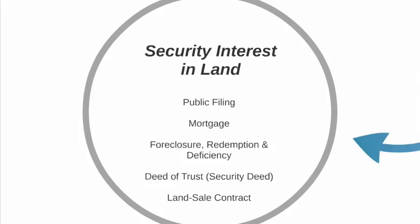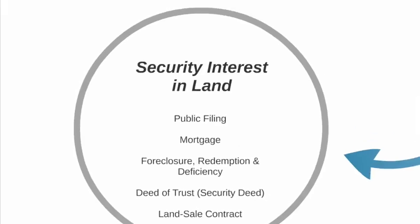We talk about the foreclosure process when a debtor fails to make payments on the mortgage. We talk about the redemption rights of the debtor against whom foreclosure has been executed. We talk about deficiency or the ability of the secured party to seek a deficiency judgment against the debtor. From there we talk about deeds of trust or security deed arrangements and we talk about land sale contracts.